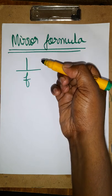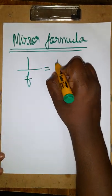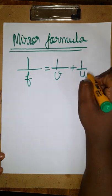1 by f, whether it is a concave or convex, both the lenses, this mirror formula will be applicable. 1 by f is equal to 1 by v plus 1 by u.